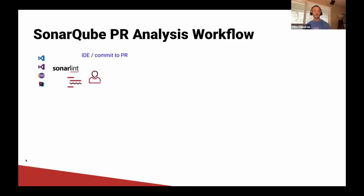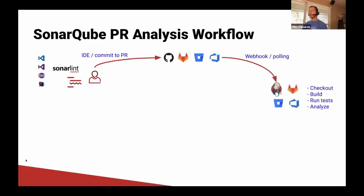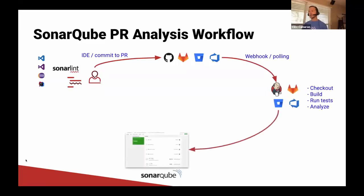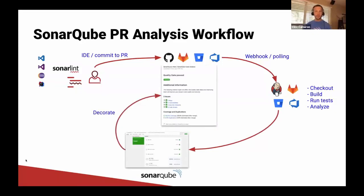Before we see the live demo, let's take a quick look at a typical workflow. SonarLint is a free and open source IDE extension that finds issues on the fly while you're coding. Once we're done writing code and ready to open our PR, that kicks off our CI systems to check out and build code, which in turn kicks off an automatic SonarCube analysis. When that analysis is complete, any bugs and vulnerabilities detected are decorated right back into your PR.